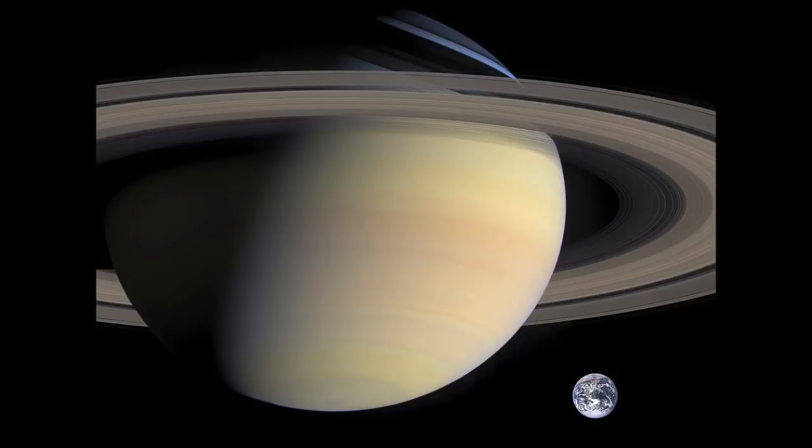O'Donoghue continued to say that if these rings are temporary, we may have missed out to see Jupiter, Uranus, and Neptune's giant ring systems which are currently thin ringlets.